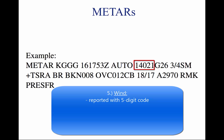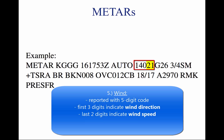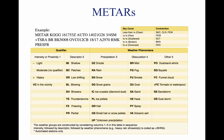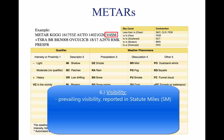Five, wind — 14021G26, reported with a five-digit code unless the speed of the wind is over 99 knots. The first three digits indicate the direction the true wind is blowing in tens of degrees. If the wind is variable, it is reported as VRB. The last two digits indicate the speed of the wind in knots. If the winds are gusting, the letter G follows the wind speed, followed by the peak gust recorded. Six, visibility — three-quarters SM. The prevailing visibility is reported in statute miles, denoted by SM, in both miles and fractions of miles.